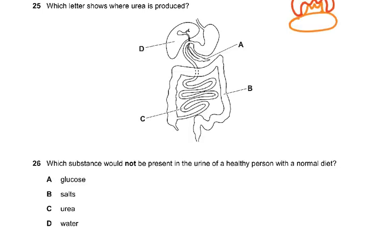Question 25: which letter shows where urea is produced? It has to be D because it's the liver. Urea is produced by the process of deamination, where excess amino acids have their amino part removed.